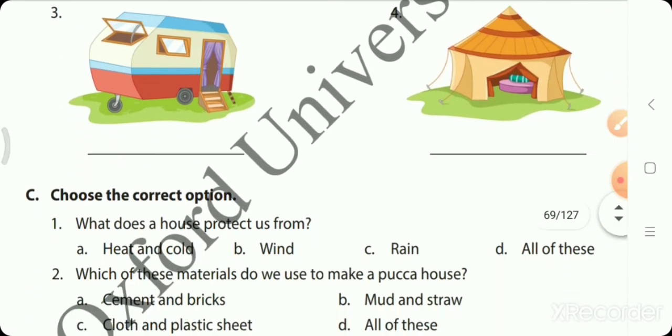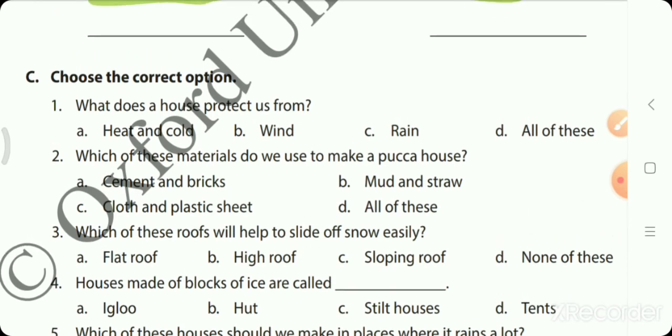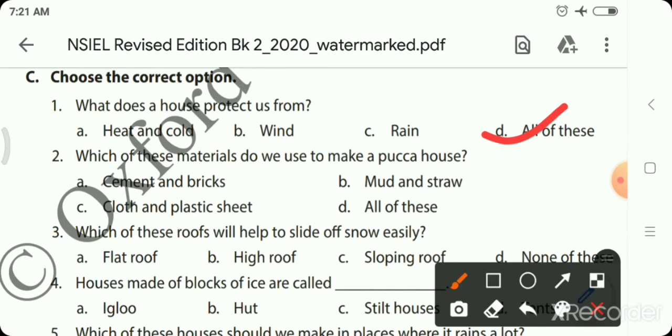Choose the correct option. What does a house protect us from? Heat and cold, wind, rain, or all of these? So all of these. Which of these materials do we use to make paka house? Cement and bricks. Mud and straw for kacha house, cloth and plastic sheet for tent.